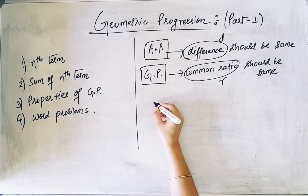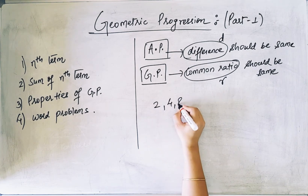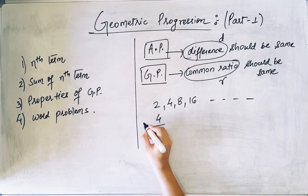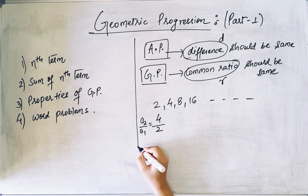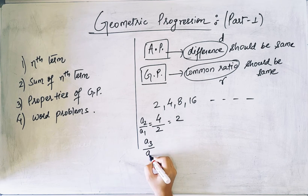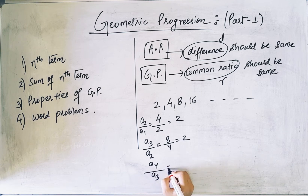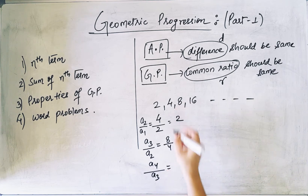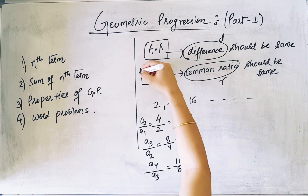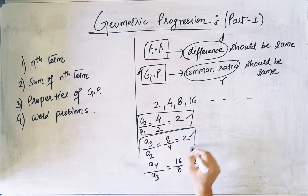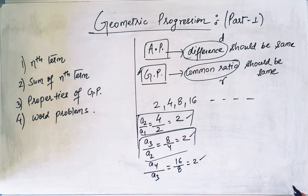Let's suppose we have the series 2, 4, 8, 16 and so on. The second term by first term is 4/2 = 2. Third term by second term is also 2. Fourth term by third term is also 2. So in geometric progression it is a series in which the ratio should be same, just as in AP the difference should be same.